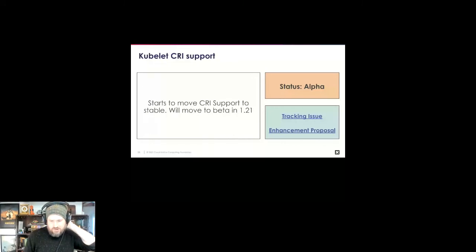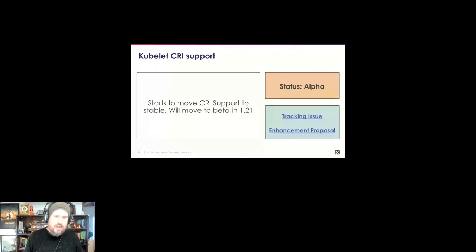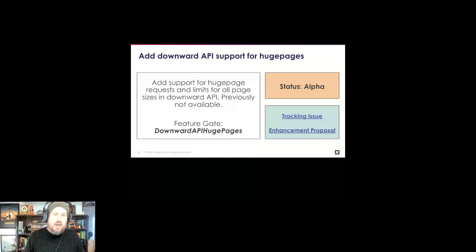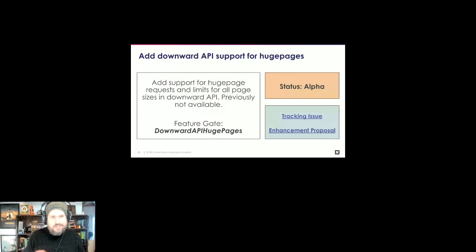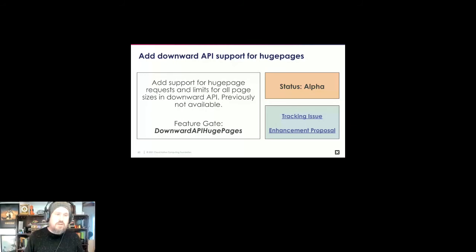CRI support was introduced in Kubernetes 1.5 and is expected to go to beta in 1.21 — part of what needed to happen was deprecating the Docker shim. It's staying alpha in 1.20 but with significant foundational work. There's also a new alpha feature adding huge page support to the downward API — previously you could not use huge pages with the downward API, but now you can project huge page size and limits into pods. Additionally, external credential providers for the kubelet — using exec plugins to pull image pull secrets — are alpha, with two new kubelet flags and a YAML resource to define how these external executables obtain credentials.